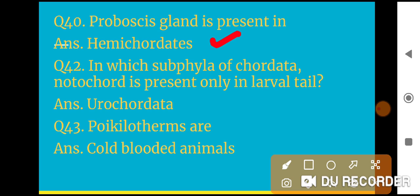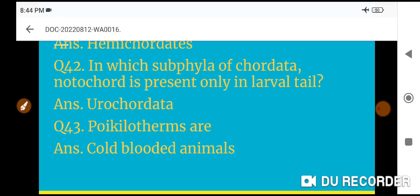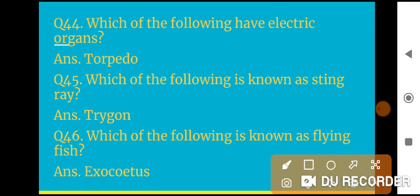Question 40: Water vascular system is present in Echinoderms. Question 41: Proboscis gland is present in Hemichordates. Question 42: In which subphylum of Chordata is notochord present only in larval tail? Urochordata is the correct answer.